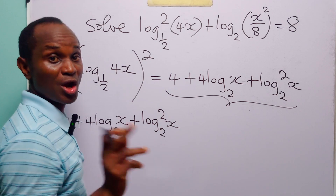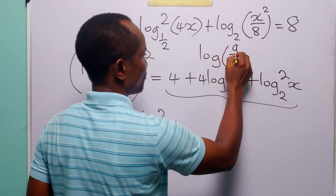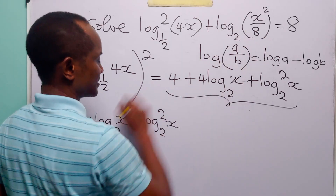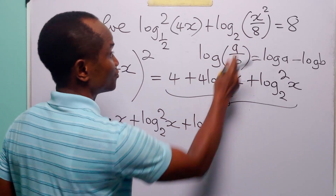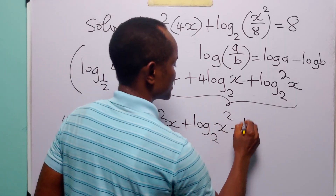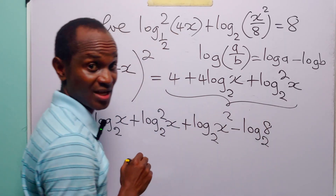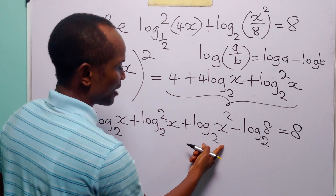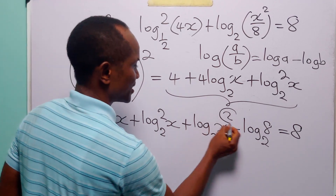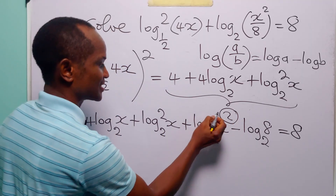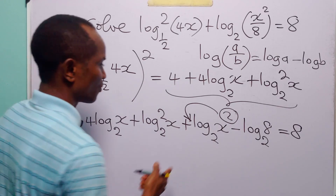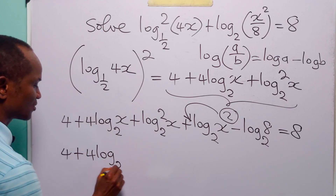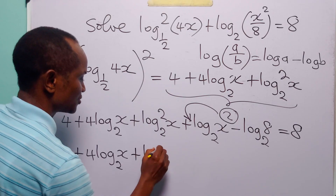Now let us look at the second term. Remember that log(a over b) is equal to log a minus log b. That means we can write this as log to base 2 of x squared minus log to base 2 of 8, and this is still equal to 8. The next thing we are going to do is apply the power rule of logarithms — we can bring down the exponent 2 of x to the front as a multiplier. So this equation becomes 4 plus 4 times log to base 2 of x plus log squared to base 2 of x, plus 2 times log to base 2 of x minus...